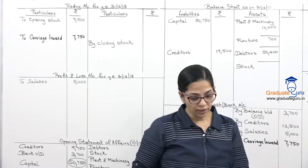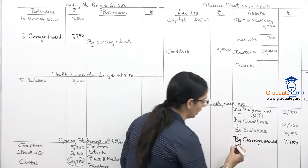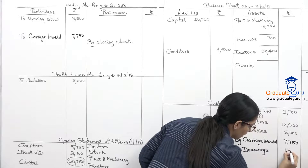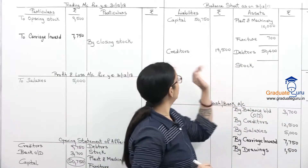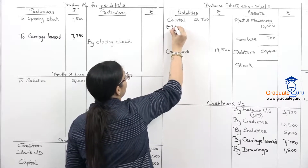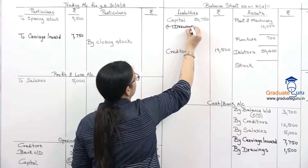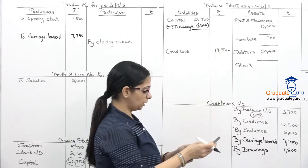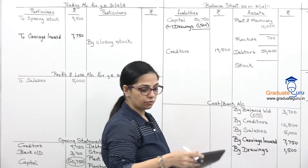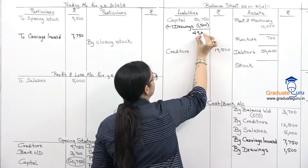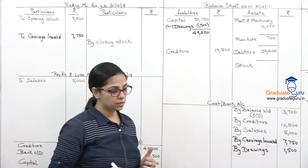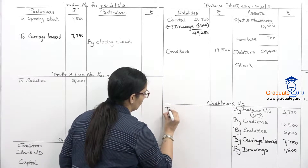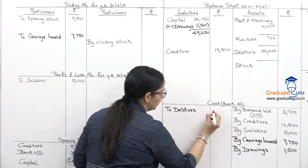Drawings of 1,500 — payment side of cash bank. Second effect goes to balance sheet, subtracting from capital: 50,750 minus 1,500 equals 49,250. Receipts from dators of 30,000 — debit side of cash bank, and second effect in dators account as by cash bank 30,000.